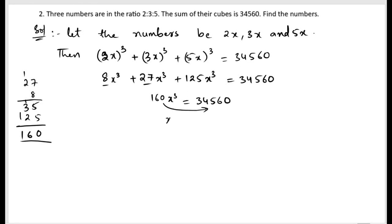Now we will send this 160 down, so it will become x cube equals 34560 by 160. Cancel. So what is left? 34560 by 16. 4 4s are 16, 4 8s are 32, 4 6 are 24, 1 left, 4 4s are 16. So x cube equals 216.